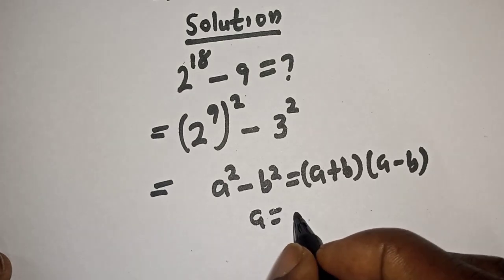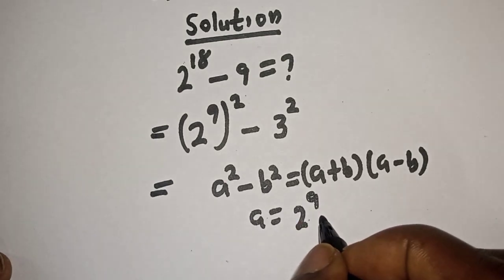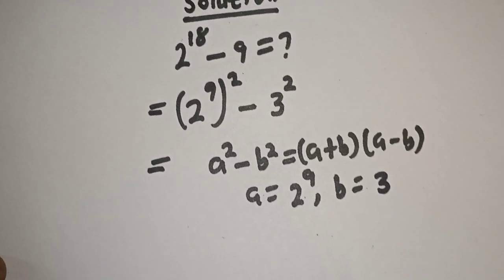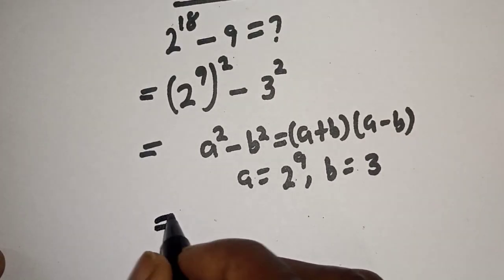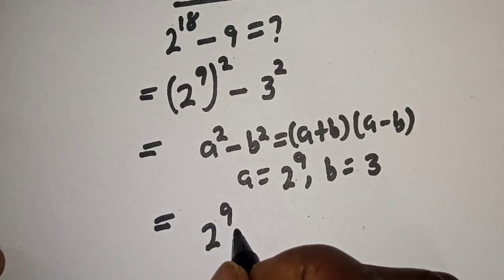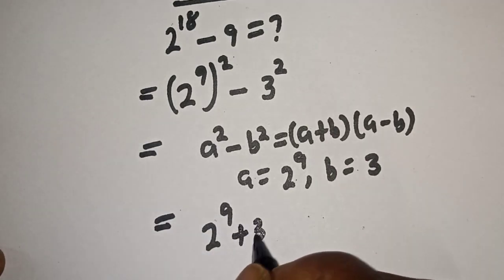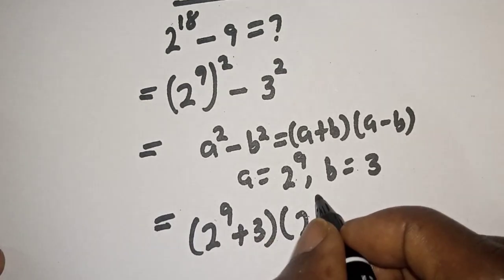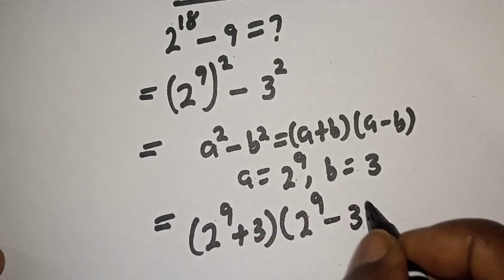this is equal to a plus b bracket a minus b. Again, where a is equal to 2 raised to power 9 and b is equal to 3. Let's see, this is equal to 2 raised to power 9 plus 3 bracket 2 raised to power 9 minus 3.